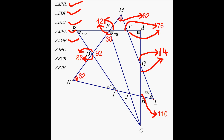Now, angle GHL and angle JHC — these two angles are vertical angles. So this also has to be 110. So I found angle JHC — done. Right here, 110.